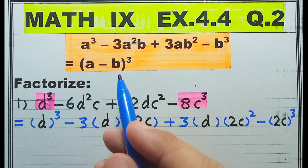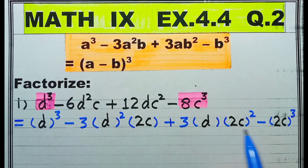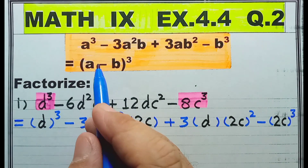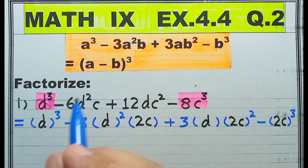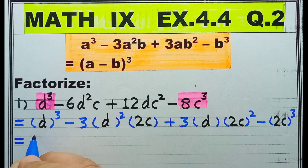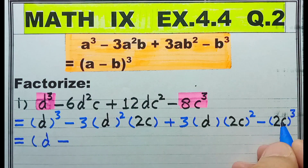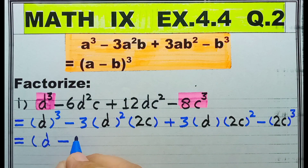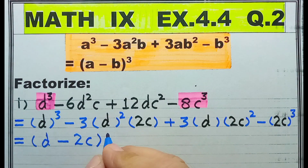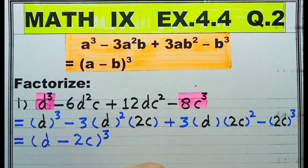It's a game of two steps. The first step is done. Now let's go for the second step. Aur second step mein chahiye a — this is a — minus b — this is b — whole cubed. This is the required answer.